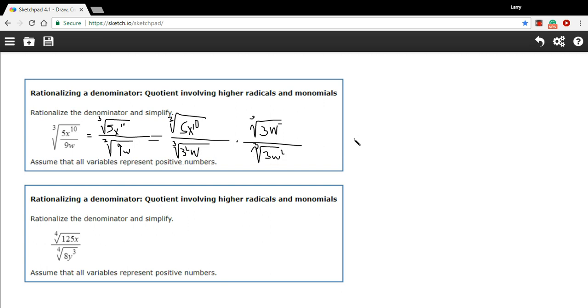On the bottom here, I'm going to get the cube root of 3 squared times 3 is 3 cubed. And w times w squared is w to the third.